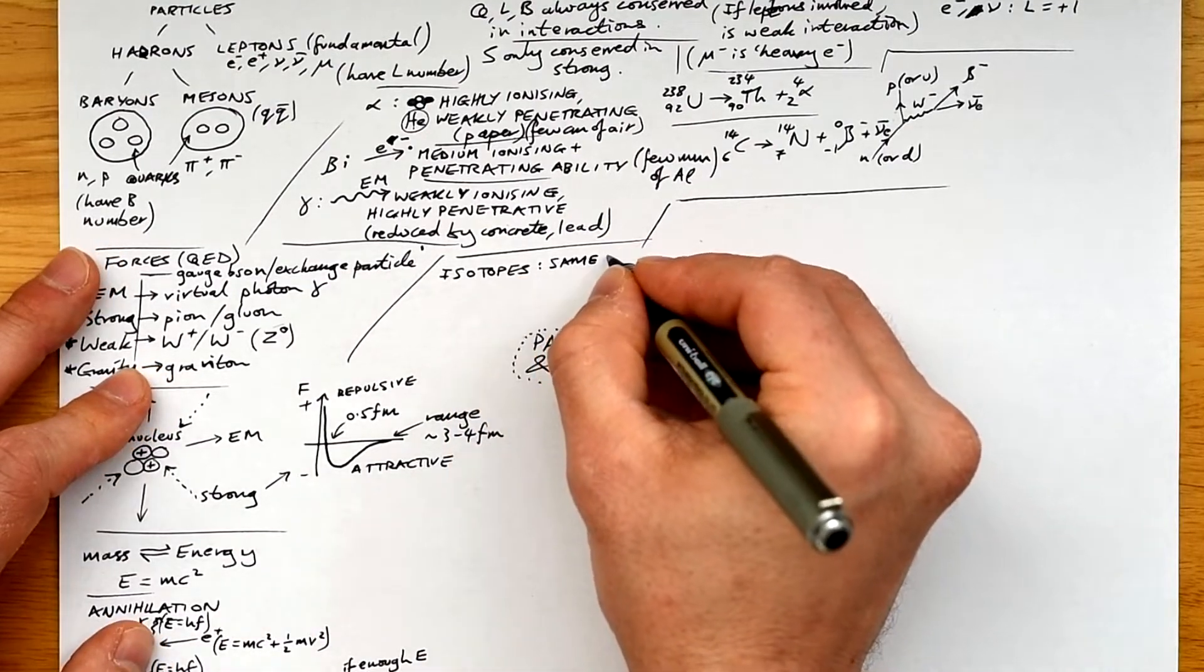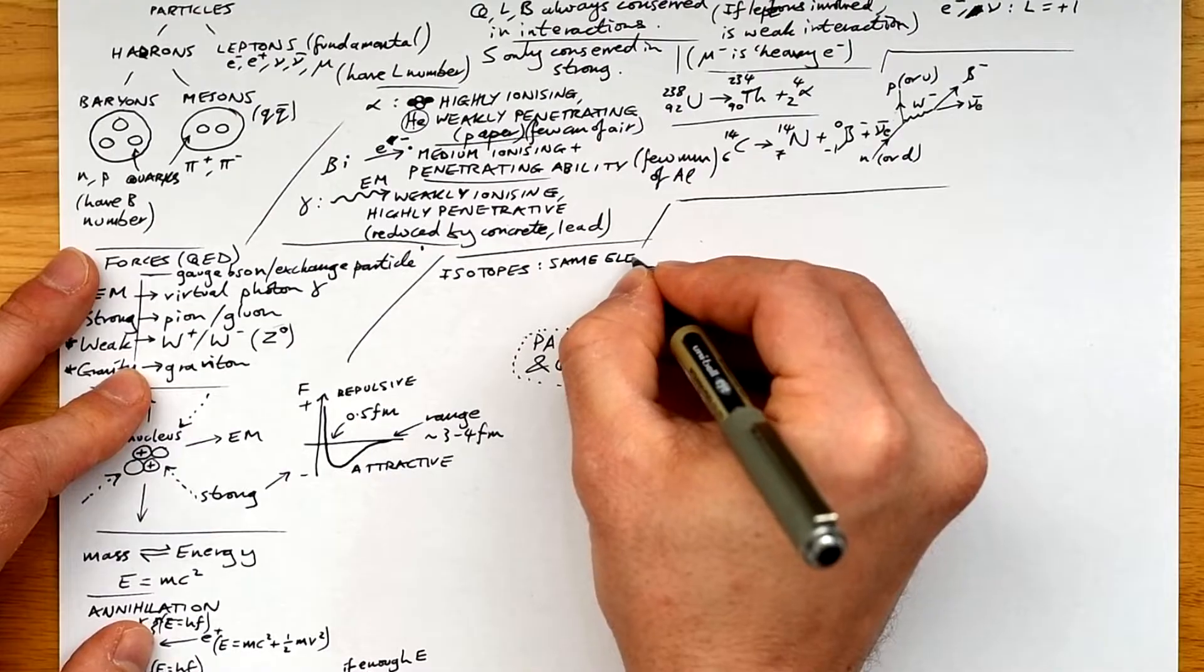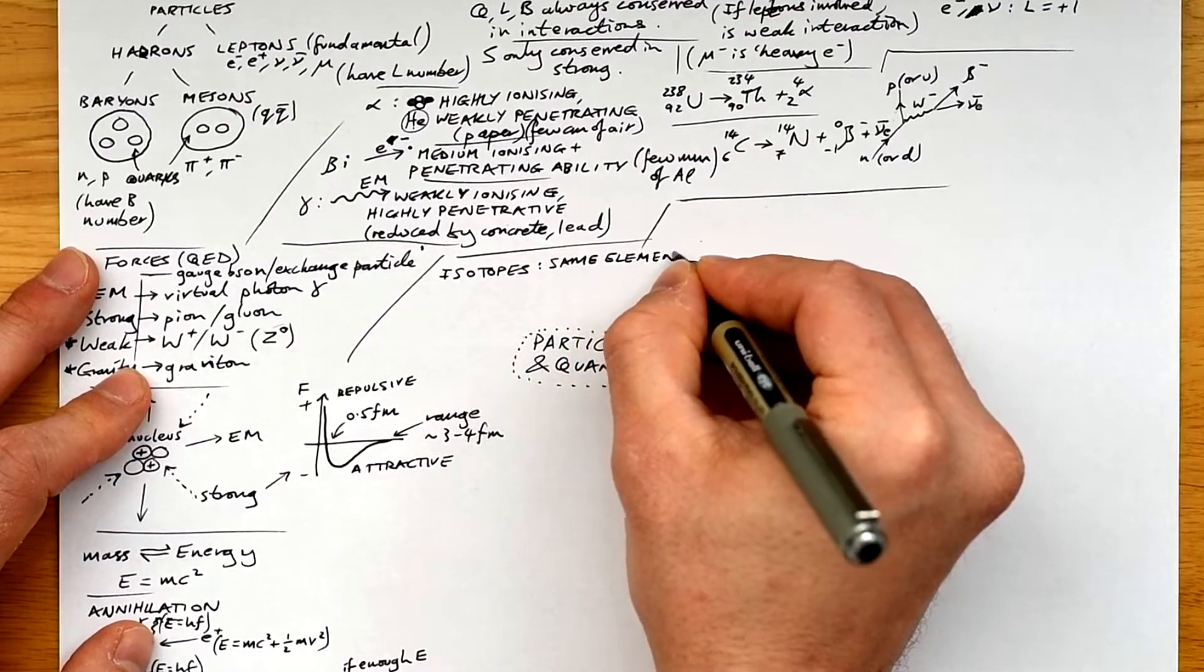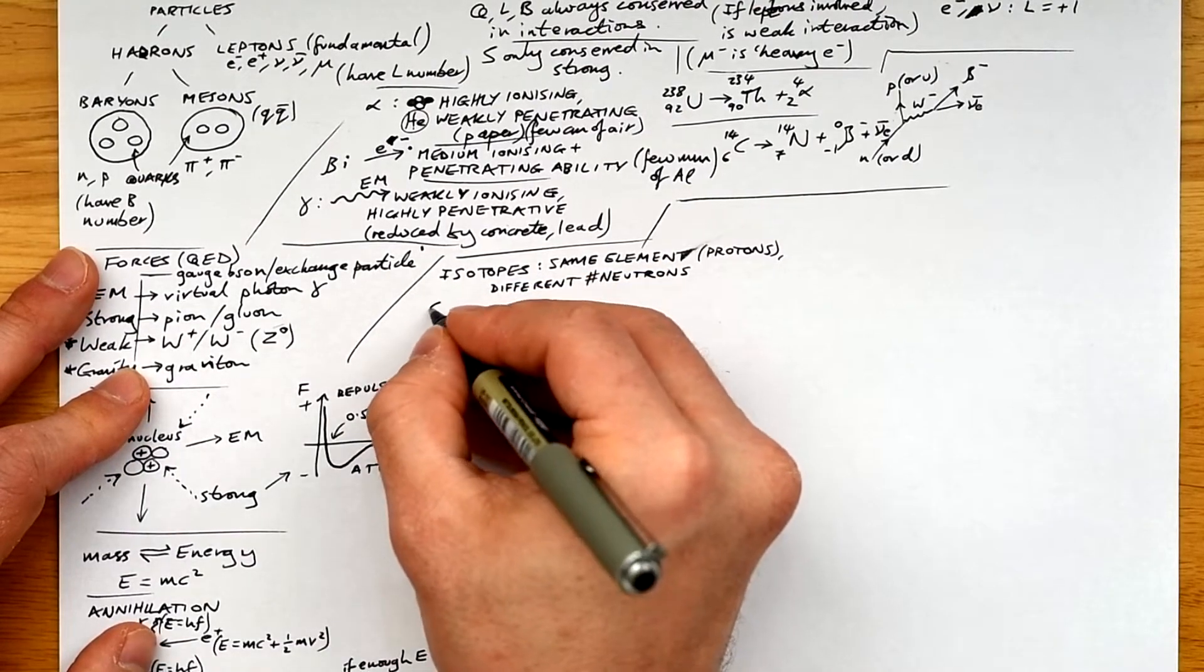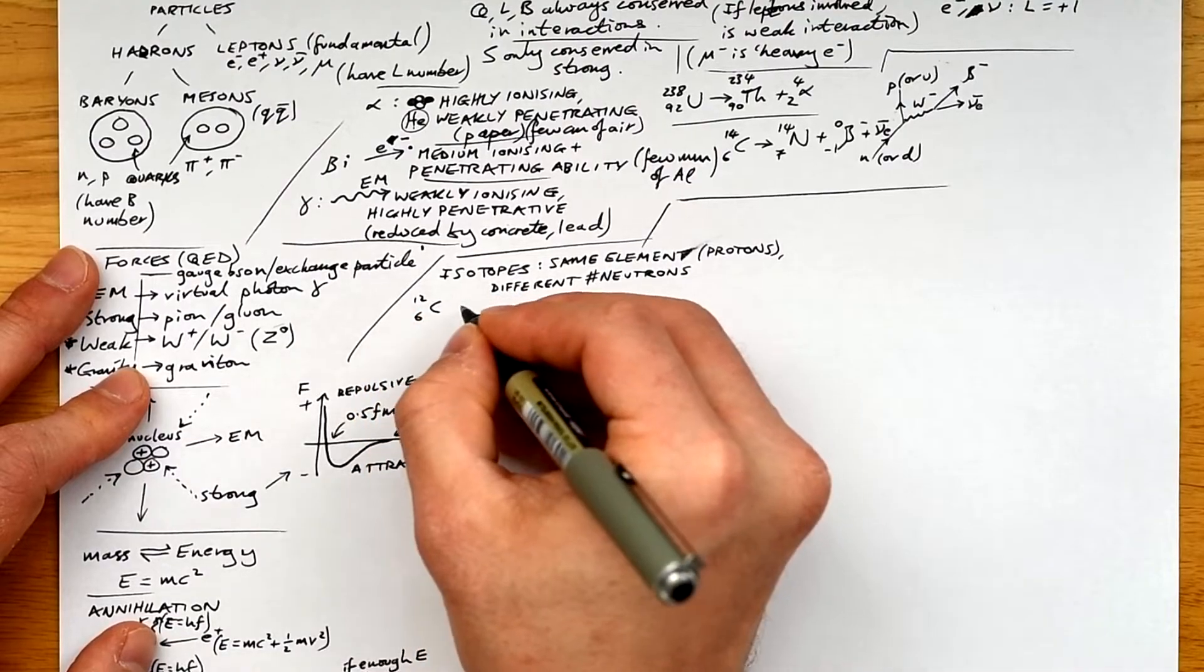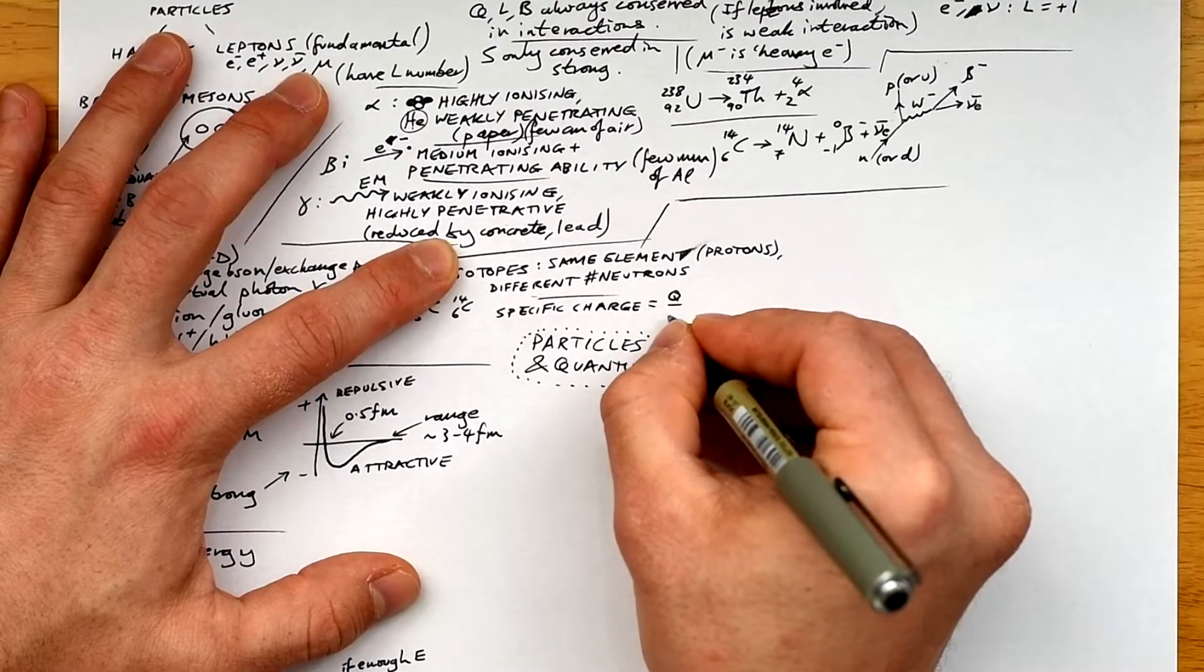Isotopes, what are they? Well, they're the same element. That means the same number of protons, or same atomic number, but with a different number of neutrons. So that means they have a different relative atomic mass, like carbon-12 and carbon-14 here.